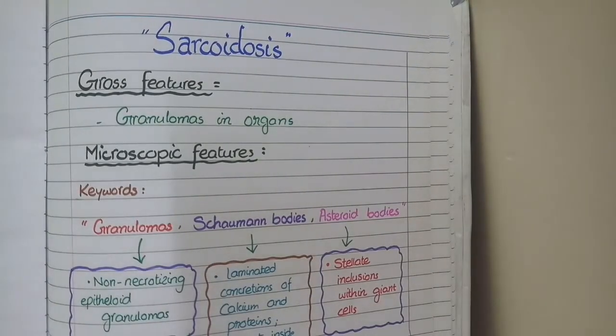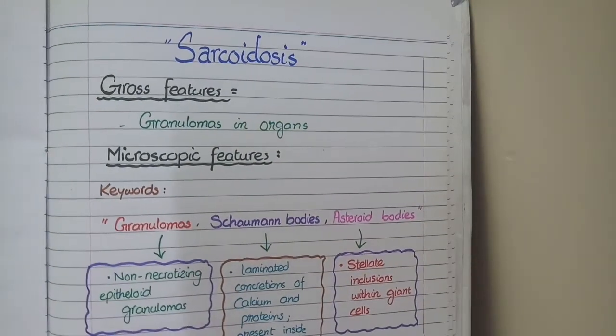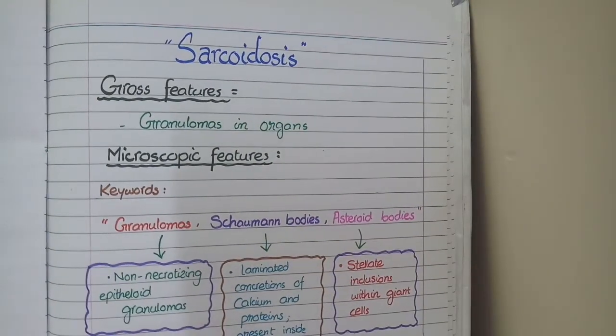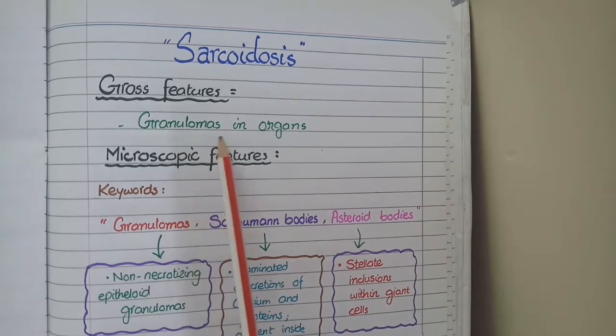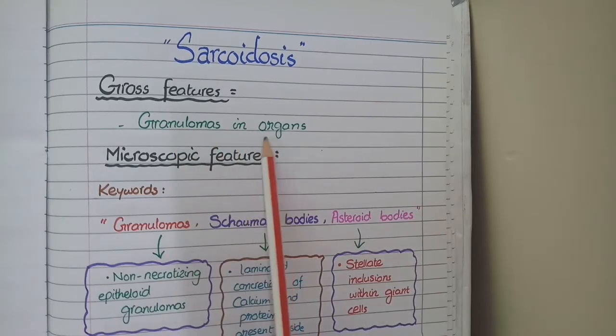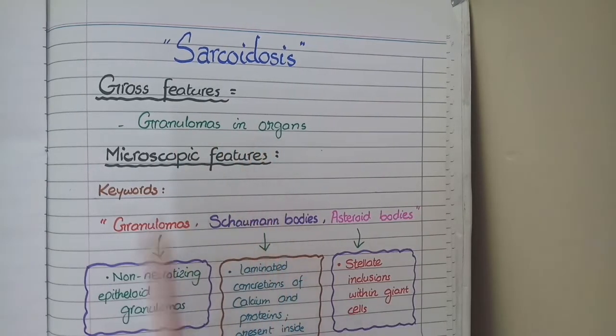In this video, we will discuss the pathological features of sarcoidosis. As sarcoidosis is a granulomatous disease, you see granulomas on the surface of lung in the gross specimen.